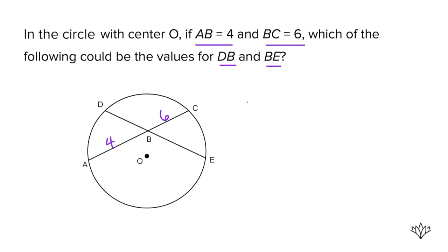It tells us that AB is four and BC is six. So four times six has to equal DB times BE. So what is the question asking? It's asking what could be the values for DB and BE? Here's what we know. On the left side, four times six is 24. So DB times BE has to be 24. We just need to look for numbers that multiply to give us 24. Let's look at the answer choices.